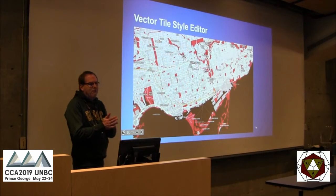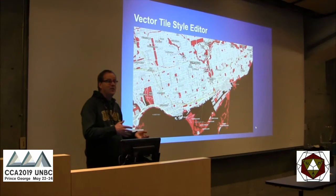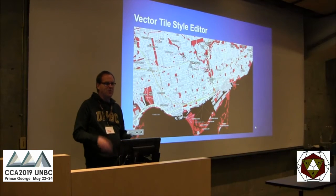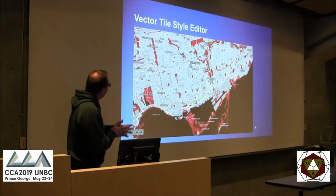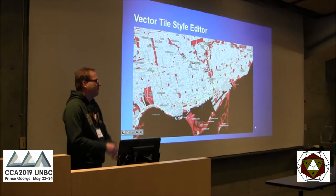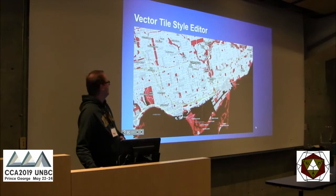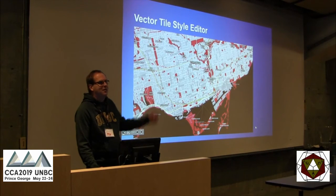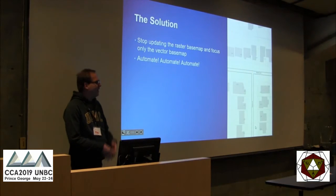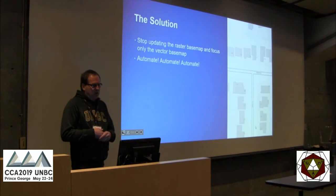Here's an example of a styled map. You might think this is kind of hideous, but this is actually what we call our Toronto Raptors map style — we've taken the official Toronto Raptors colors and applied them to the map, hopefully for good luck for tonight. And if you have another team you're fond of, you can change it to blue and white for the Maple Leafs. You can customize it to make it look however you want.